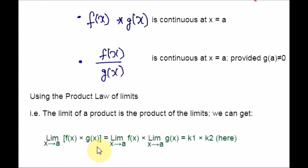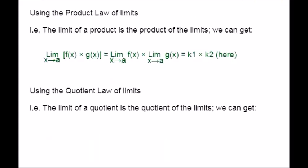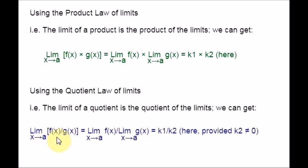By the product law, the limit of f(x) times g(x) equals the limit of f(x) times the limit of g(x), which equals k1 times k2. Similarly, we use the quotient law of limits — the limit of a quotient is the quotient of the limits. So the limit as x tends to a of f(x) over g(x) equals the limit of f(x) divided by the limit of g(x), which is k1 over k2. Here it is required that k2 is not equal to zero so that we avoid the denominator being zero. The proofs will then follow similarly.